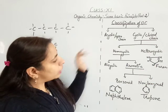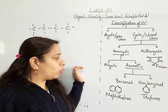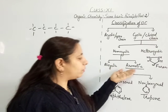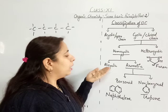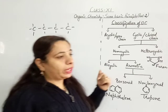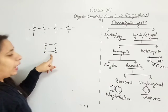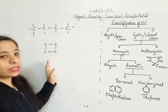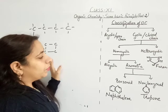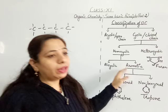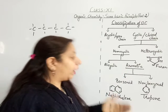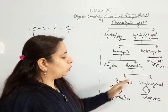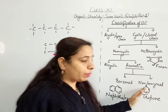Homocyclic compounds are further of two types: alicyclic and aromatic. Alicyclic means all carbon atoms are attached with single bonds only. Aromatic means there is also a double bond character present. Aromatic is further divided into benzenoid and non-benzenoid.